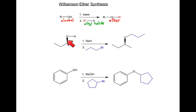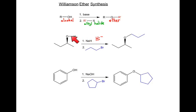Here we have a secondary alcohol with a stereocenter. The base we're going to use in this case is sodium hydride, NaH. Sodium hydride gives you Na+ and H−. H− is not a reducing agent — it is a base. NaH is the base we always use when talking about aliphatic or alkyl alcohols, followed by some alkyl halide.